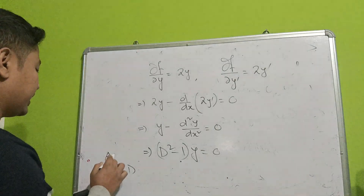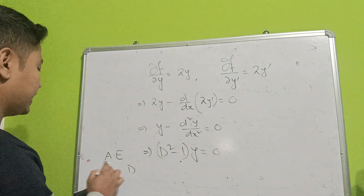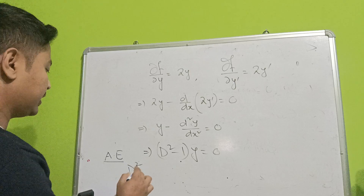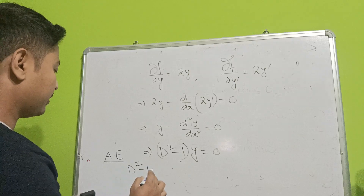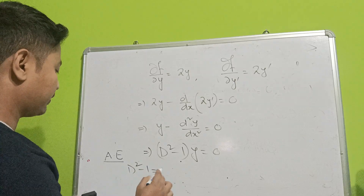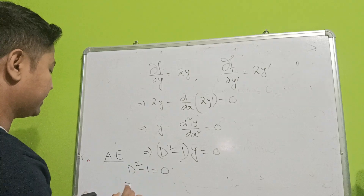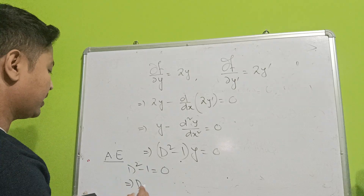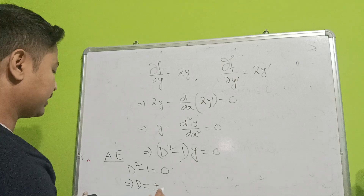The auxiliary equation here is D squared minus 1 equal to zero, which gives D equal to plus or minus 1.